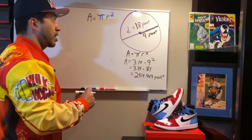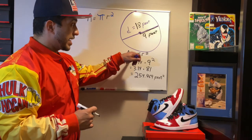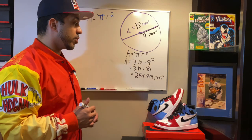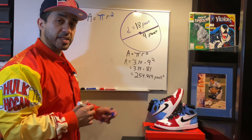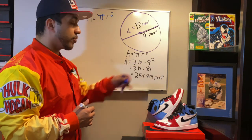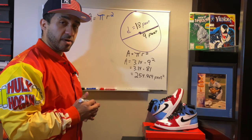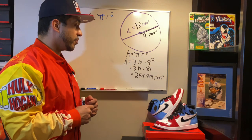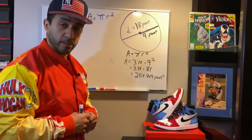So again: identify the radius, write out the formula — 3.14 times 9 squared in this instance — that gives us 3.14 times 81. That gives us a final area of this circle of 254.469 feet squared.